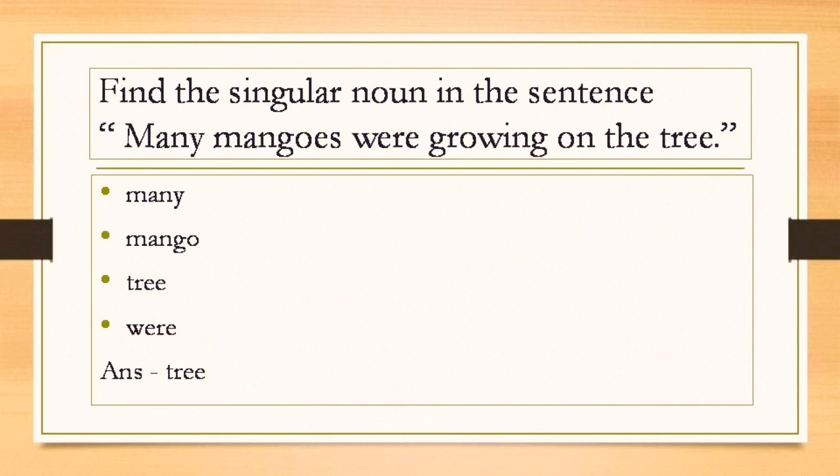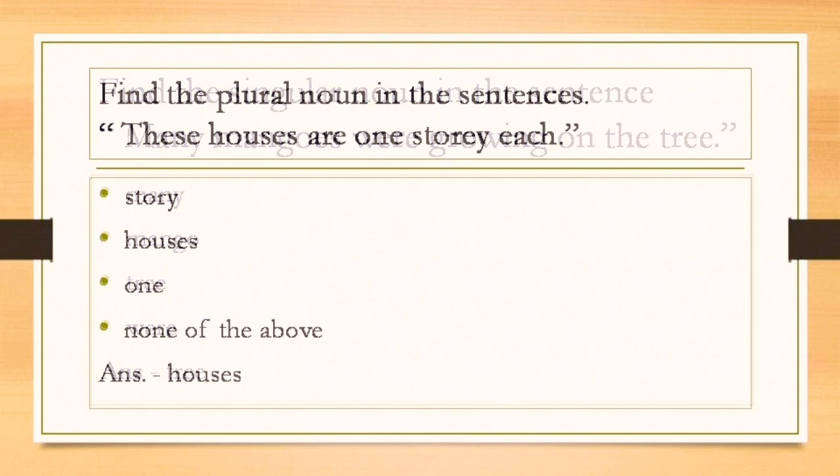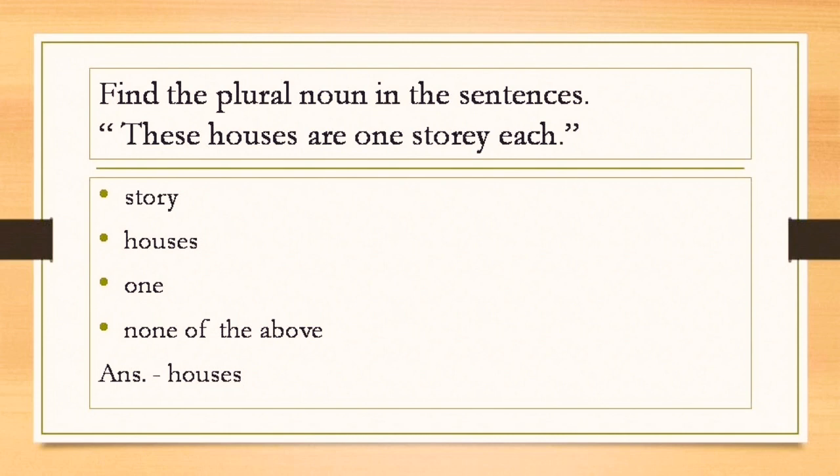Find the singular noun in the sentence. For this, you have to read the sentence properly and find out which singular noun is used. Many mangoes were growing on the tree. Which is the singular noun? Tree. We have to see in the option where tree is written. Tree is written in option number C. So option number C is the answer. Find the plural noun in the sentence. Same type of question, but here you have to find out plural noun. These houses are one storey each. The plural noun is houses. So option B is the answer.